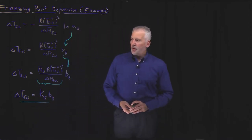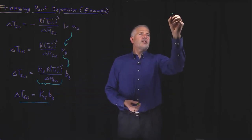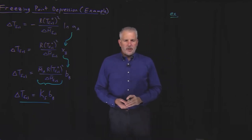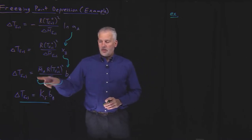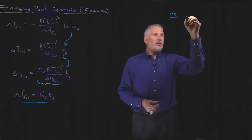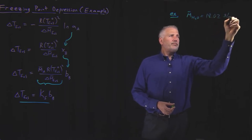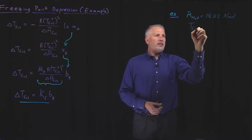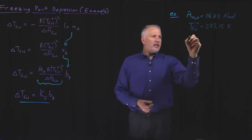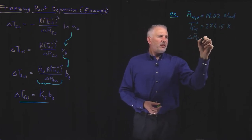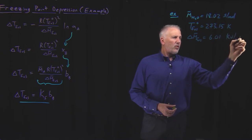To show an example of how we use these equations, let's calculate the freezing point depression constant for water. We know for water it has a molar mass of 18 grams per mole. Its melting point under standard conditions is 0 degrees Celsius, or 273 Kelvin.